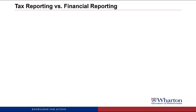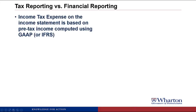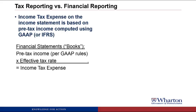Let's start with a big overview slide of the differences between financial reporting and tax reporting. On your financial statements, you come up with income tax expense, which is going to be based on the pre-tax income computed using either US GAAP or IFRS, whatever the accounting standards are in the country that you're located. On your books, you have the pre-tax income per GAAP or IFRS rules, and you multiply that times the effective tax rate to get the income tax expense on the income statement.